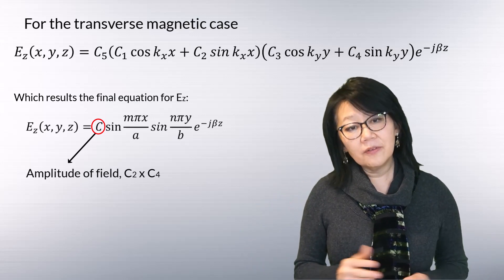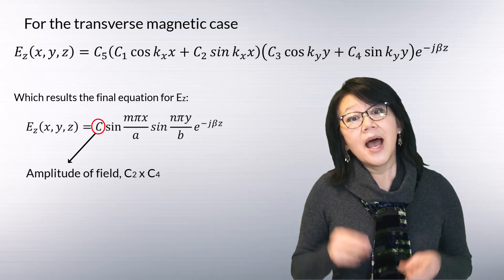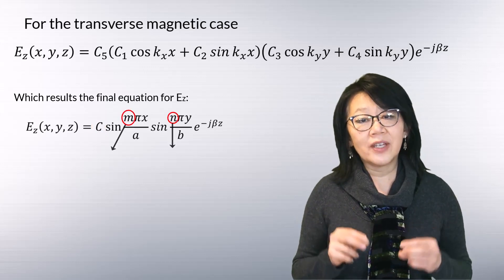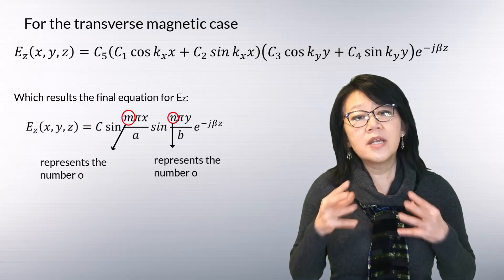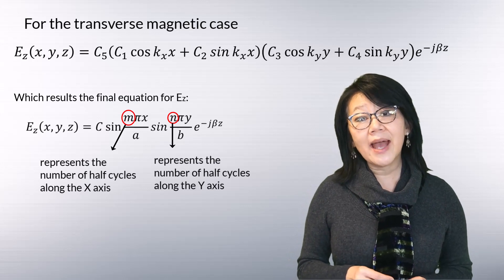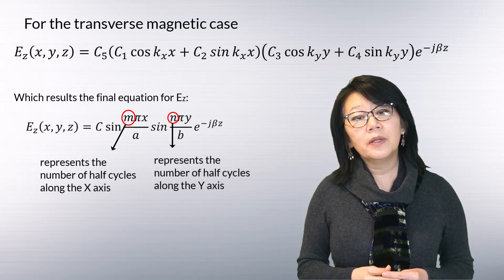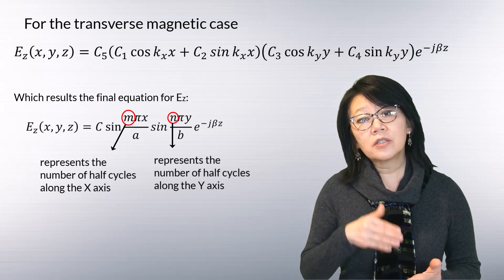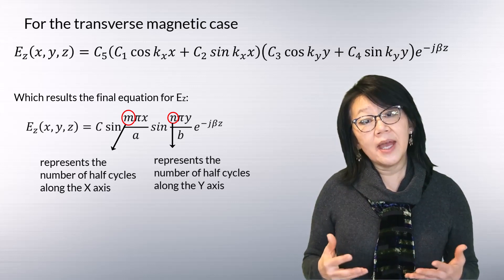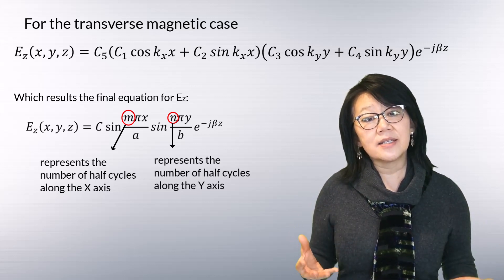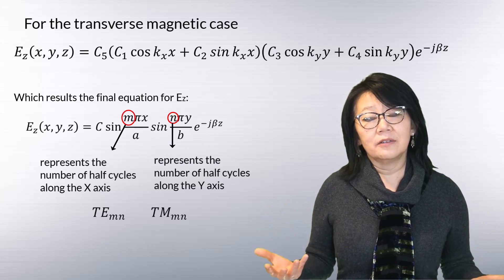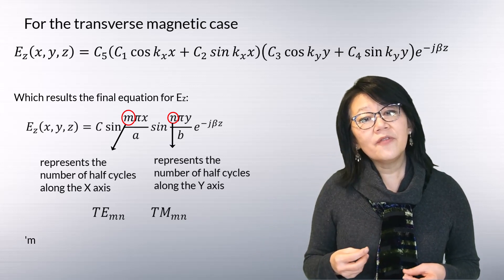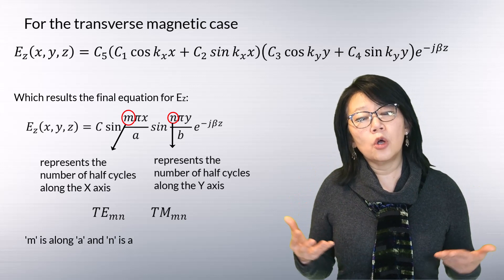This results in the Ez equation, where C is the product of integration constants c2 and c4, representing the amplitude of the field. The values of m and n define the mode of the fields — specifically the number of half cycles along the axis in the transverse plane. The TE and TM modes are defined using m and n as indices.